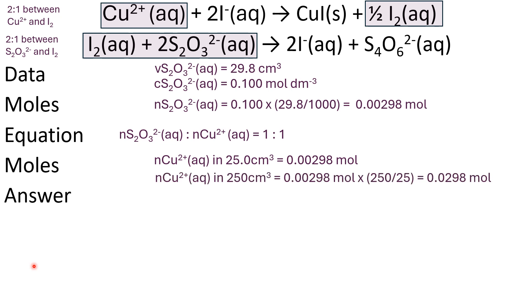But we want the number of moles in our 250 cm³ we made up earlier. That's scaled up by a factor of 250/25, which is 10. So that gives us 0.0298 mol.